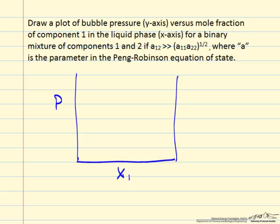The parameter in the Peng-Robinson equation accounts for non-ideal behavior. So when A1,2 is greater than the geometric average, what does this mean?